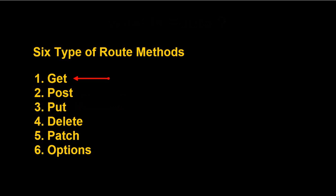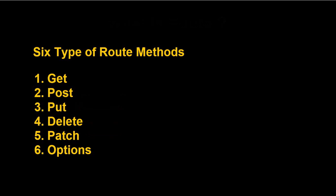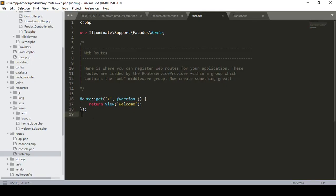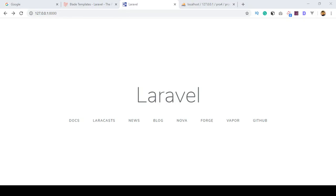When you want to get data from the database you use the GET method. When you want to insert data into the database you use the POST method. When you want to update data you use the PUT method. When you want to update a single field you use the PATCH method. When you want to delete data you use the DELETE method. For now, the home route is using GET to retrieve all data and simply return the view page, which is the welcome blade in our views folder — that is what loads by default when you run the project.